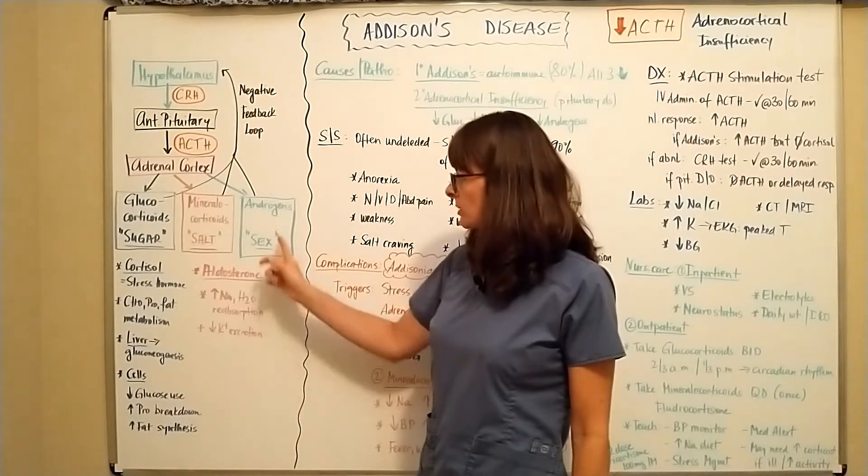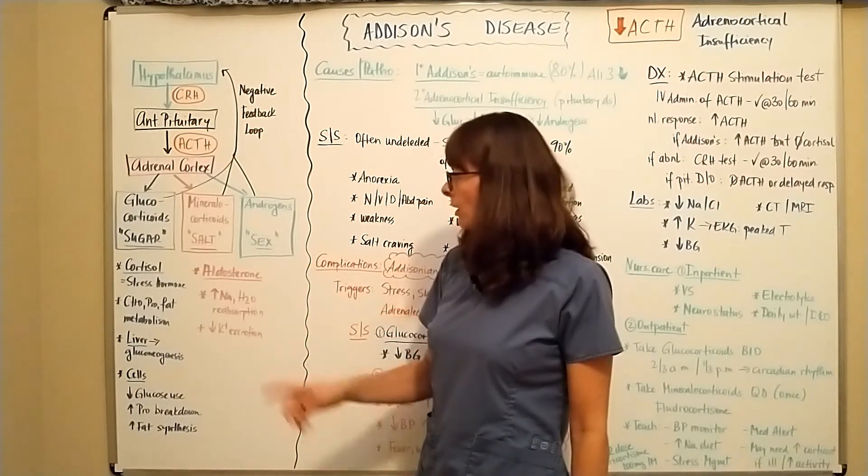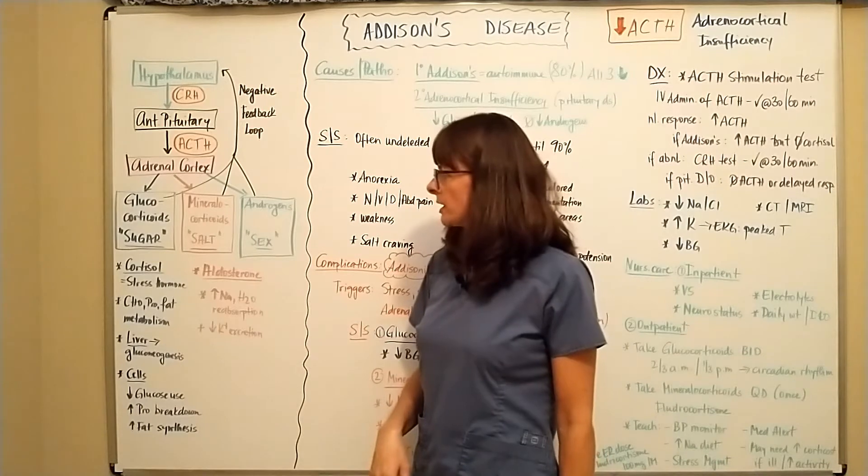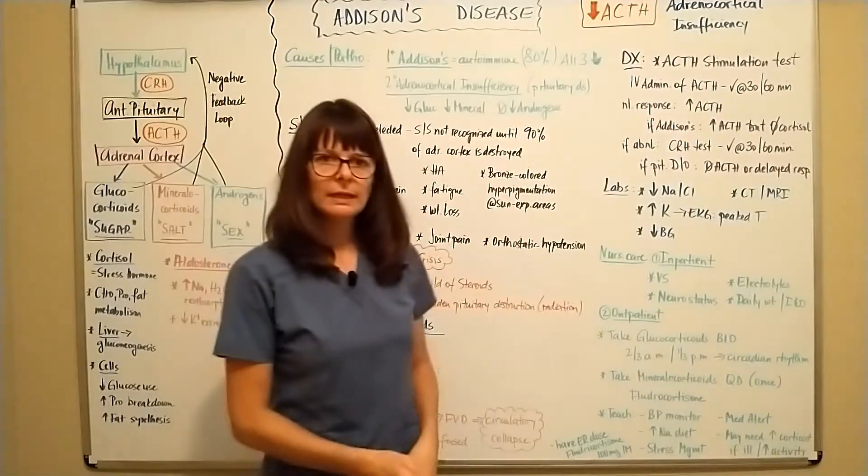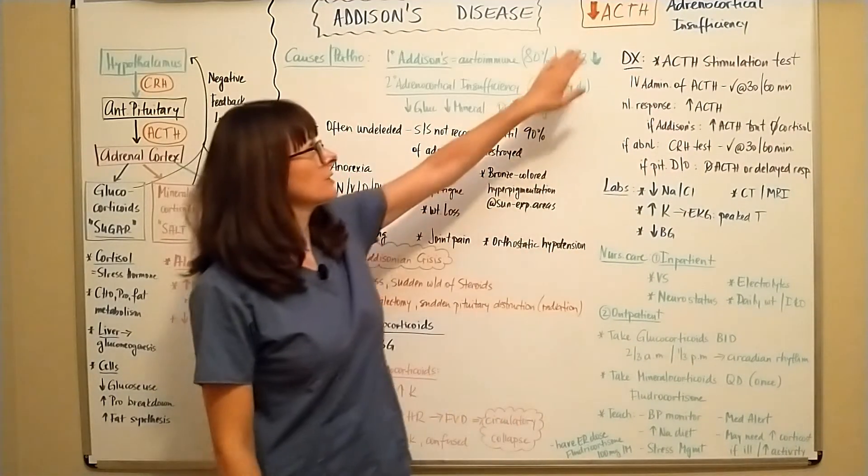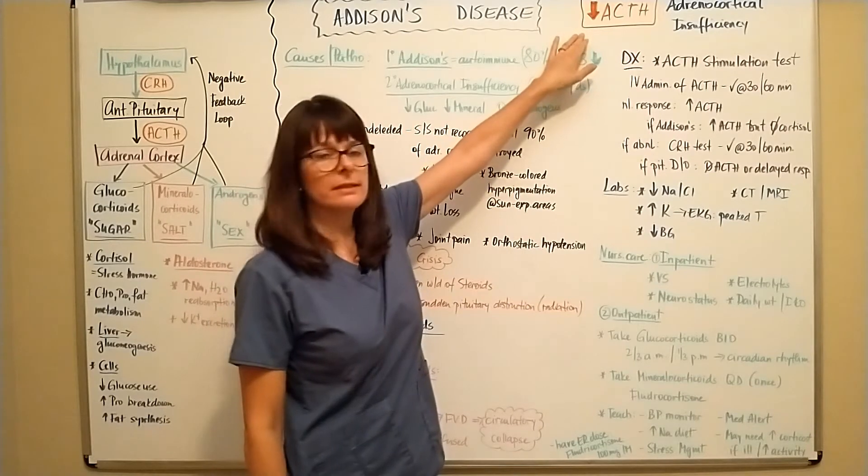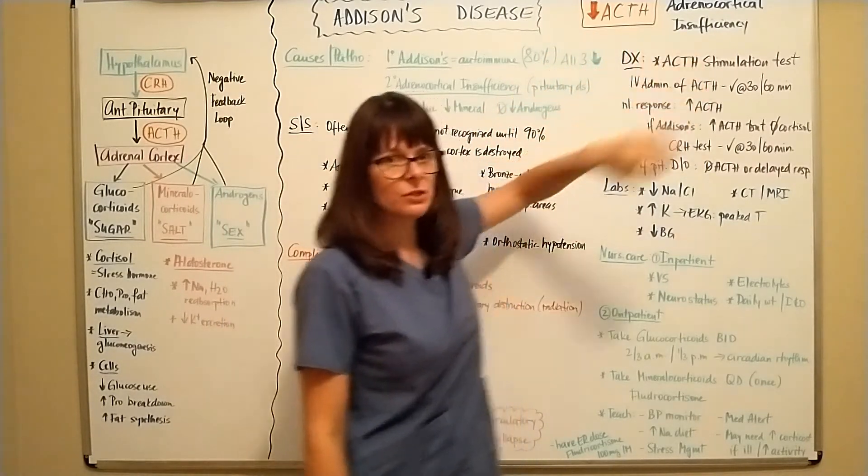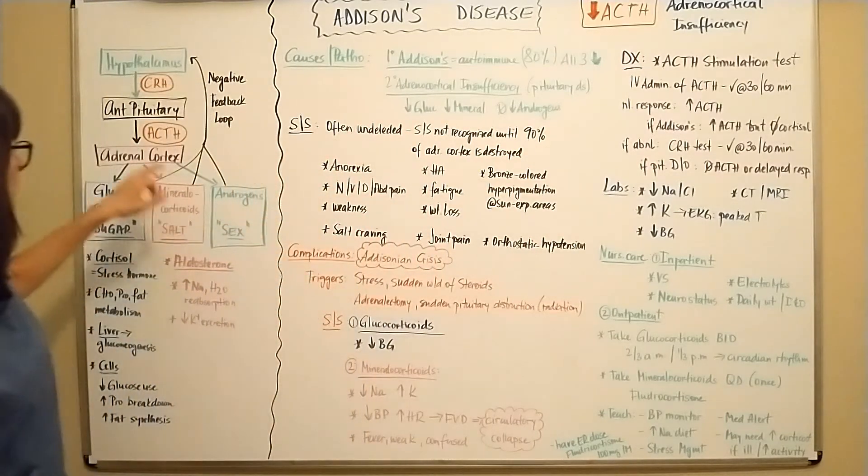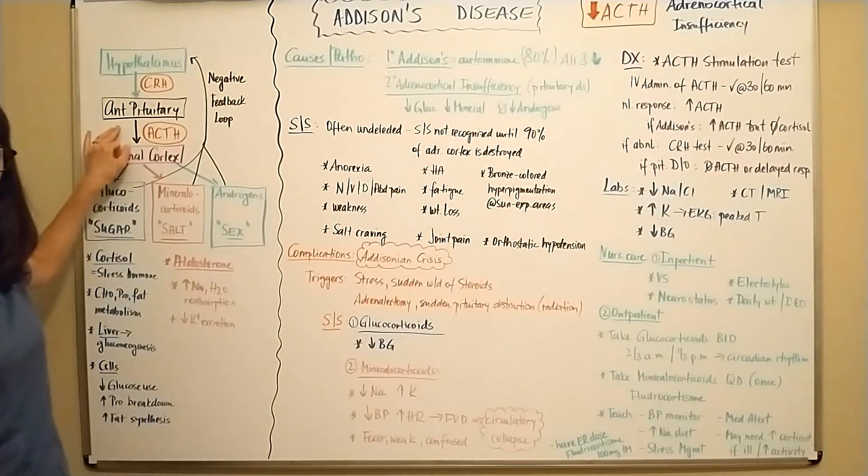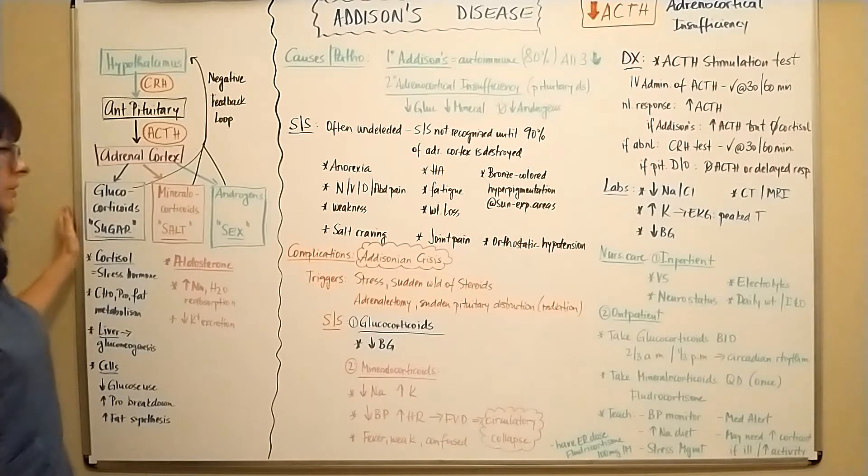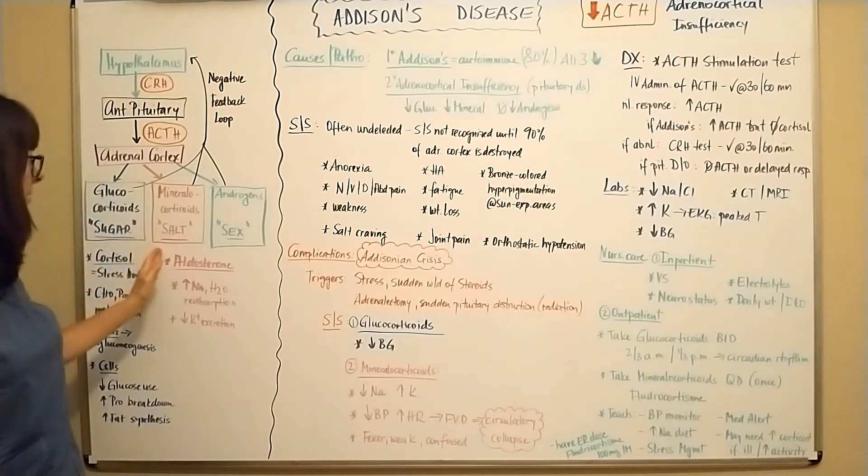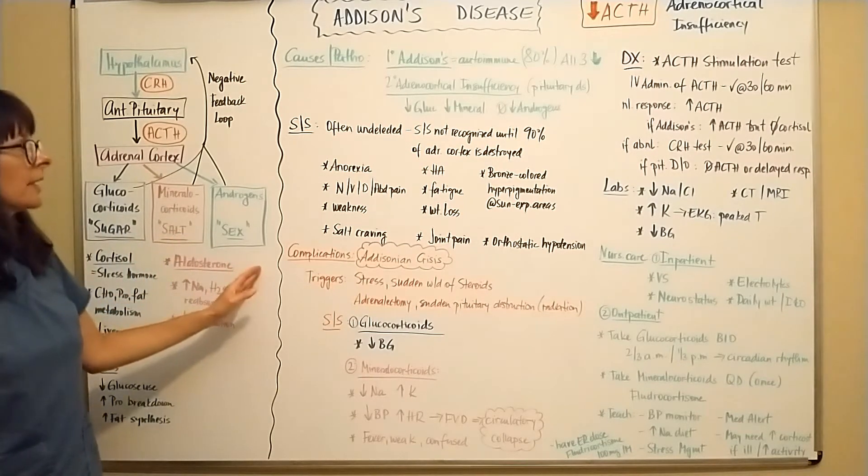And then we have our sex hormones, androgens, which are also important here. In Addison's disease, we have decreased ACTH or also called adrenocortical insufficiency. So now we're dealing with decreased levels of ACTH, which will lead to decrease of glucocorticoids, mineralocorticoids, and androgens.